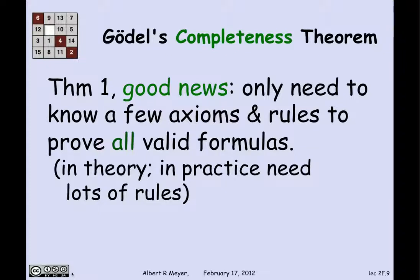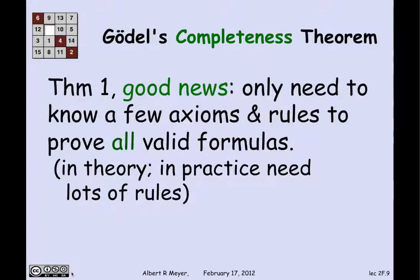In practice, if you're trying to do automatic theorem proving, you need much more than this minimal system. But it's intellectually interesting that a fairly economical set of axioms and inference rules is in theory sufficient to prove every logically valid sentence. This is known as Gödel's completeness theorem. Gödel was a great German mathematician who spent the latter part of his life at the Institute for Advanced Study in Princeton as an emigre. He has two major theorems: the completeness theorem, and an incompleteness theorem which we may talk about in a few lectures. The good news is you can prove everything that's valid using a few simple rules.